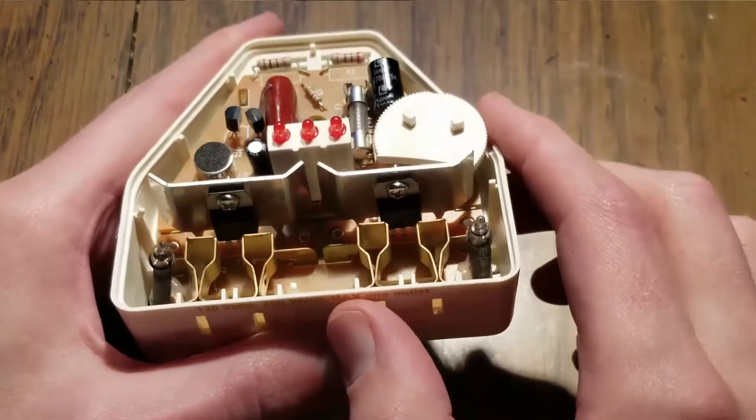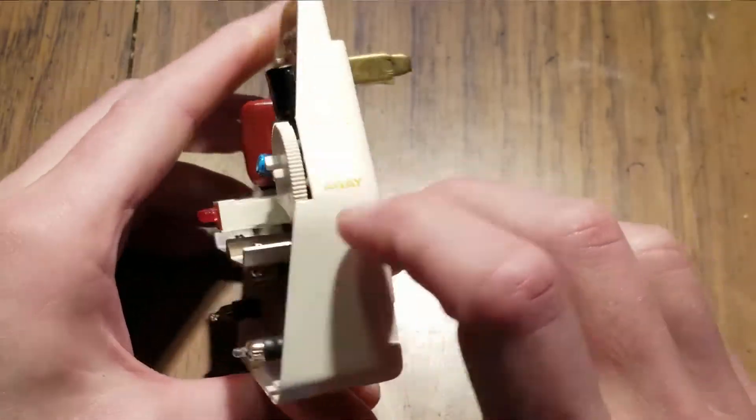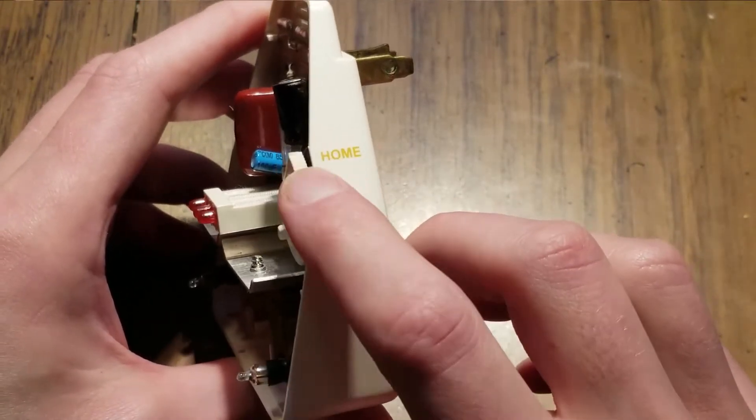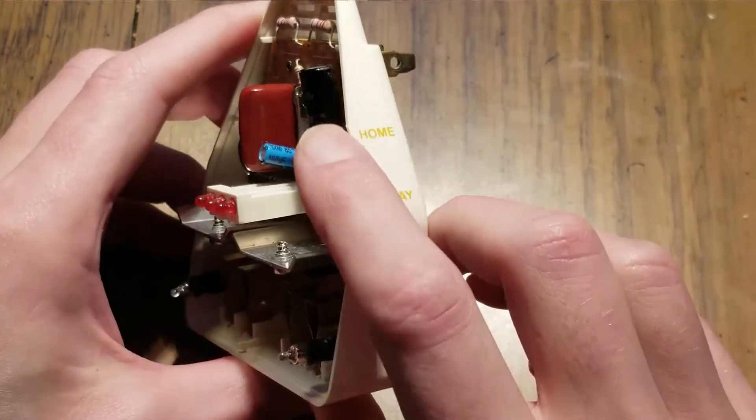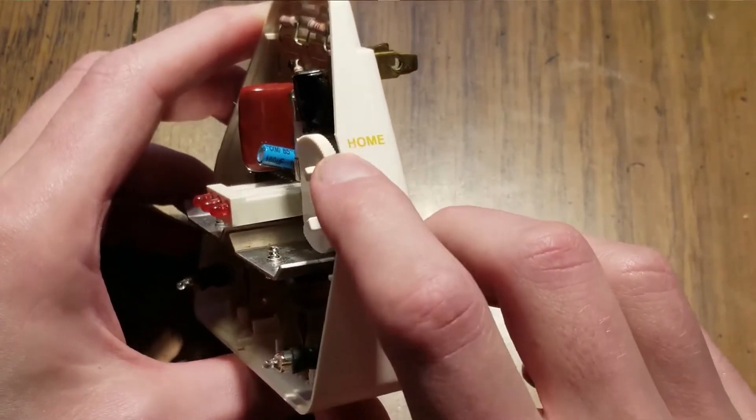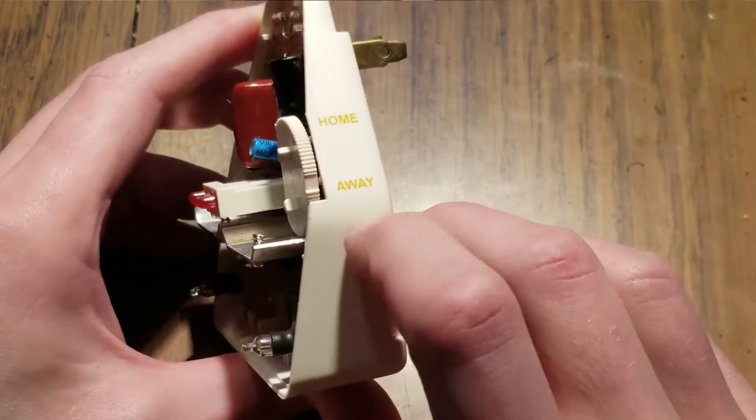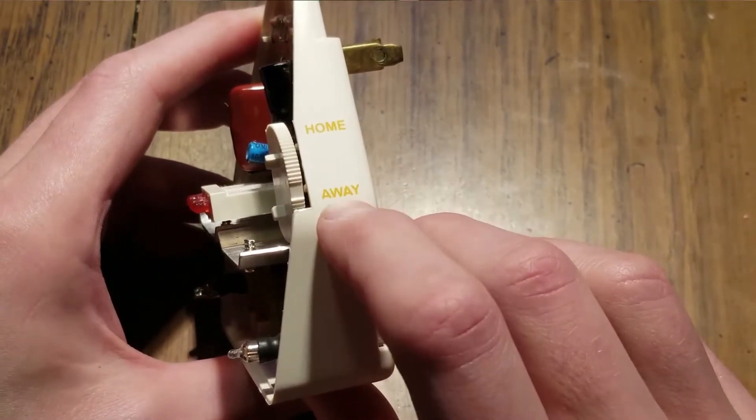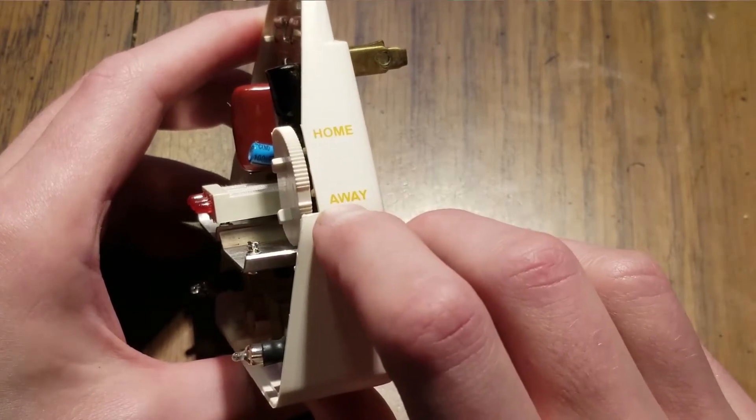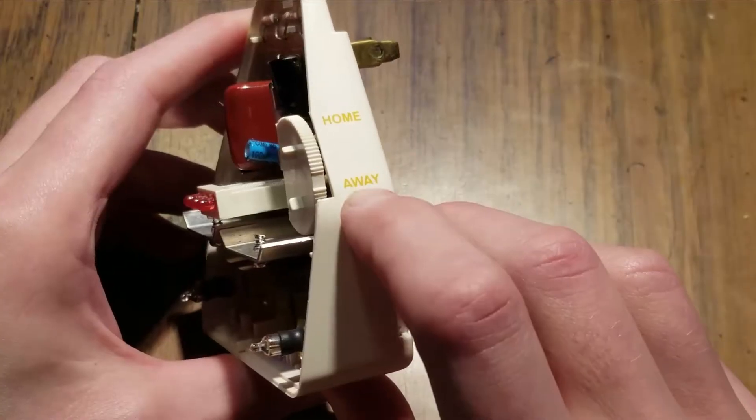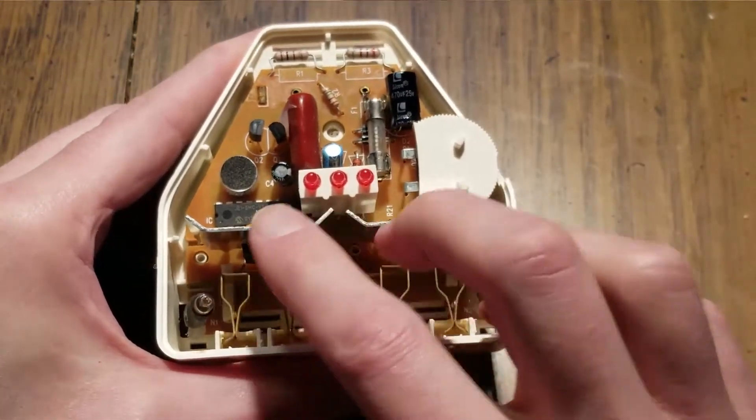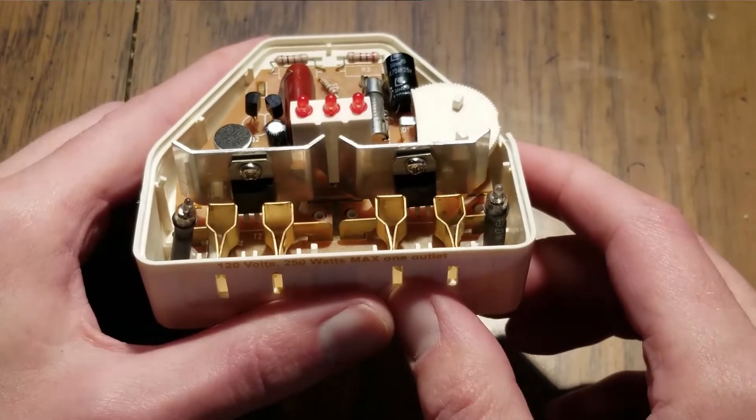And then it'll either switch on or not. Then we have this dial right here for how sensitive you want the microphone to be. So if you're home, you have it set one way. If you're not, the other way. And the thing is, if you're away and this is set to away, it'll be much more sensitive. And if it detects any loud noises at all, it'll pretty much turn on.